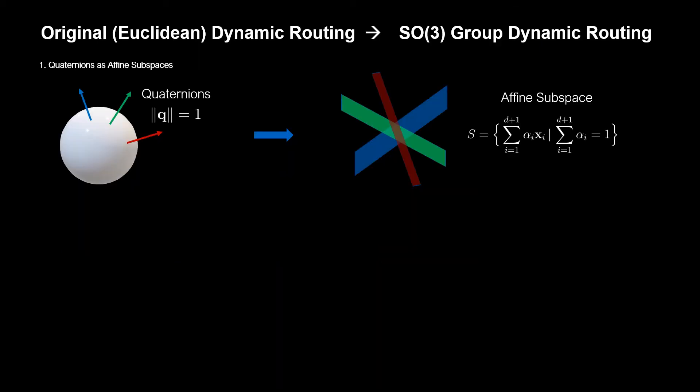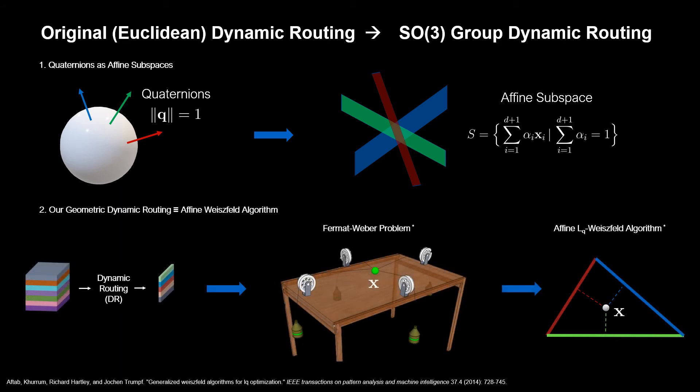By considering quaternions as different affine subspaces, we show an intriguing theoretical link between the proposed geometric dynamic routing and the geometric median problem, which in this case can be solved via affine-Weisfeld algorithm. As a direct consequence of this connection to the Weisfeld algorithm and under mild assumptions, we show that the sequence of the iterates generated by the inner loop of the dynamic routing almost surely converges to a critical point.